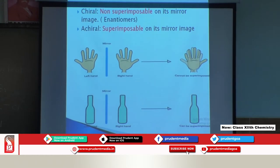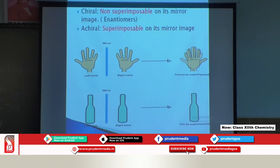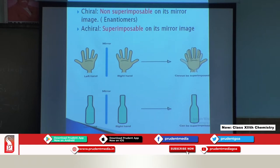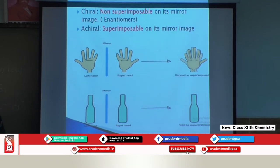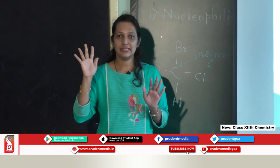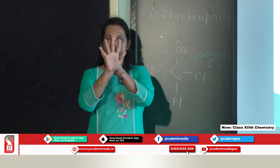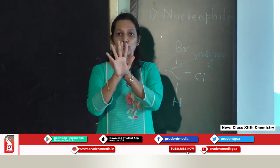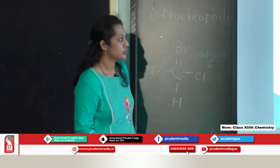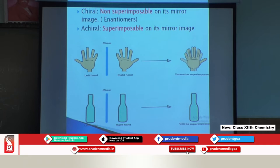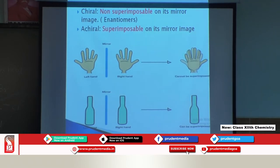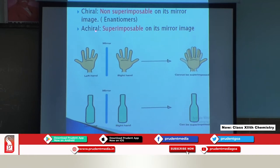Now we are going to learn two terms: chiral and achiral. If you take your left hand, the mirror image of it will look like your right hand. If we try to place the mirror image on the original, it is not going to coincide — these are known as non-superimposable mirror images. Similarly, if you take a bottle and see its mirror image, it will look the same and will coincide — it is superimposable. Non-superimposable mirror images are known as chiral, and superimposable mirror images are known as achiral.